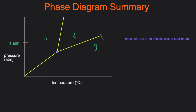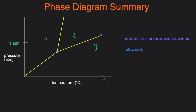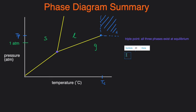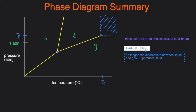Another useful point is the critical point. The critical point defines the critical temperature — traced down from it — and the critical pressure — traced over from it. Above the critical point, you can no longer differentiate between the liquid phase and the gas phase. Instead, they combine to become a new phase called the supercritical fluid.